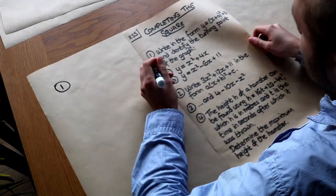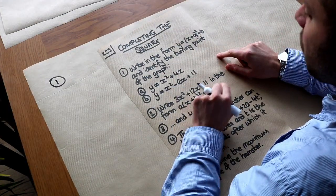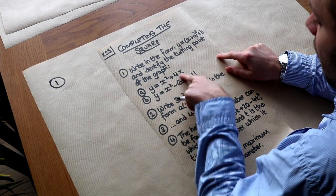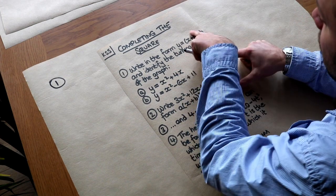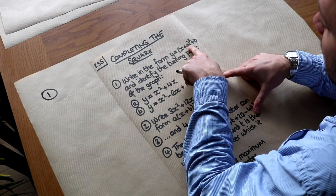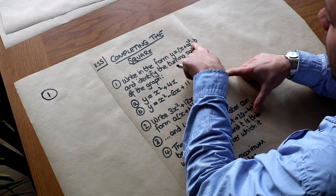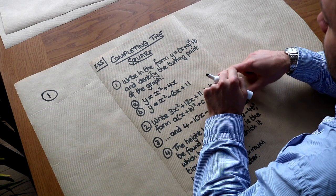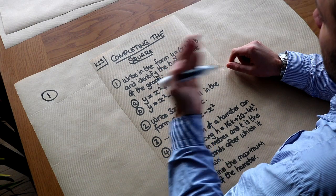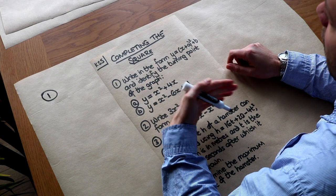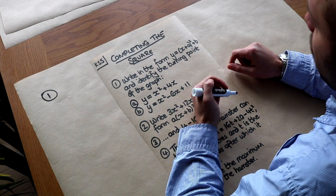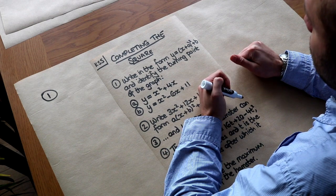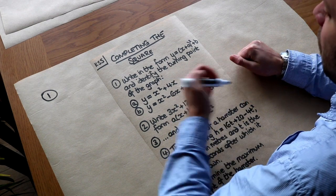What is completing the square? Completing the square is when we write a quadratic expression in the form x plus something, all squared, plus something — and there might be something in front of the bracket as well. It allows us to find the minimum or maximum value of a quadratic, and it has other applications too, for example in integration.